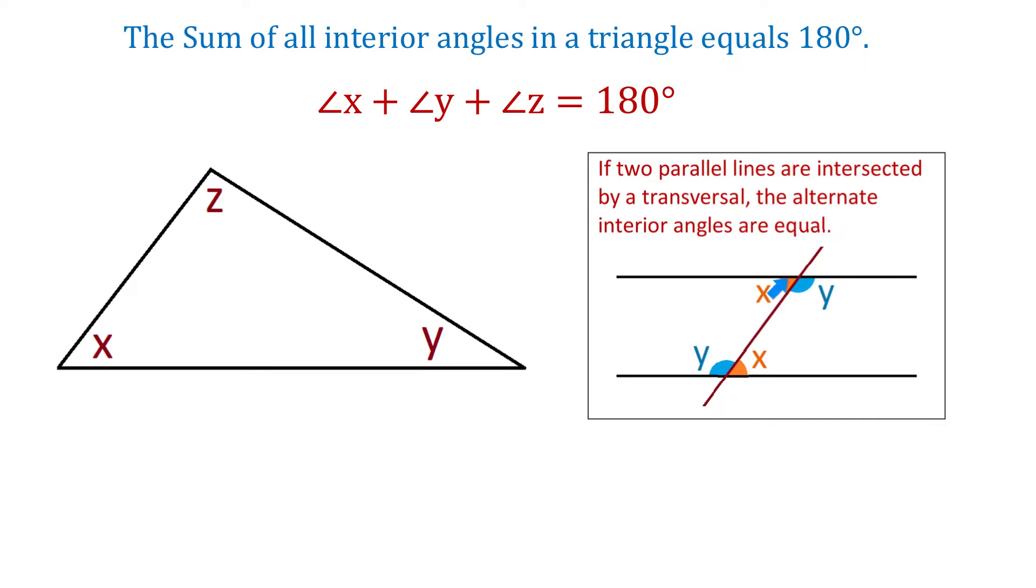A transversal is a line that crosses other lines. And alternate interior angles are angles that are on the inner side of these two parallel lines and on opposite sides of the transversal. These two orange angles are alternate interior angles.